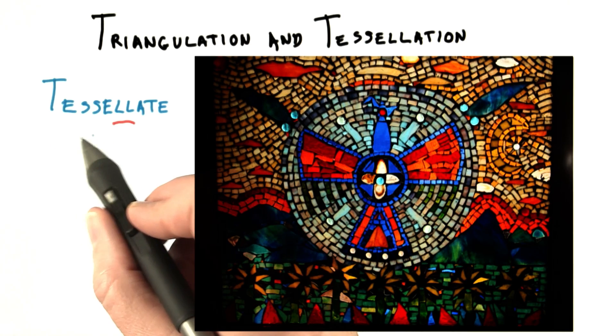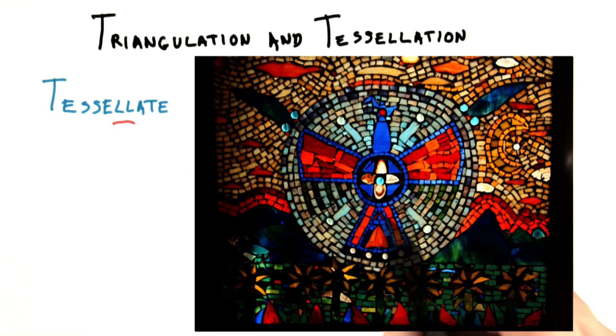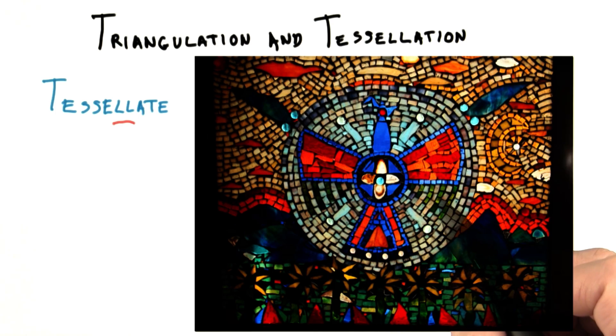The word tessellate is from the Greek word tessella, which means a small stone in a mosaic. In English, breaking an object into polygons of any sort is called tessellation.